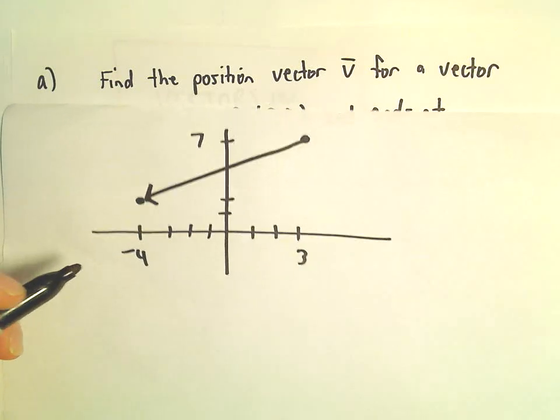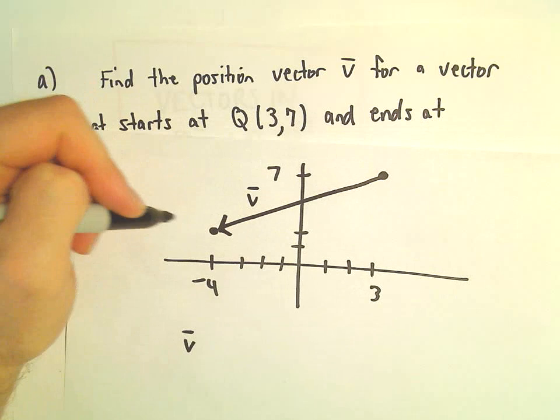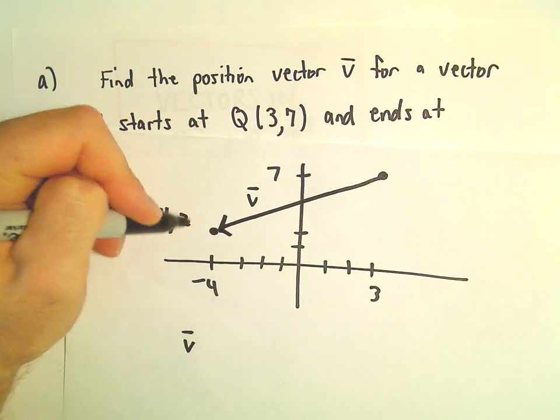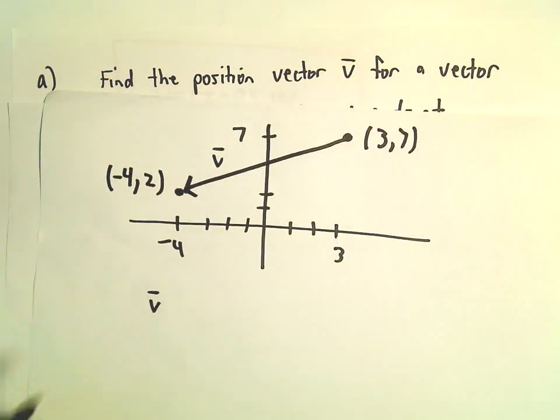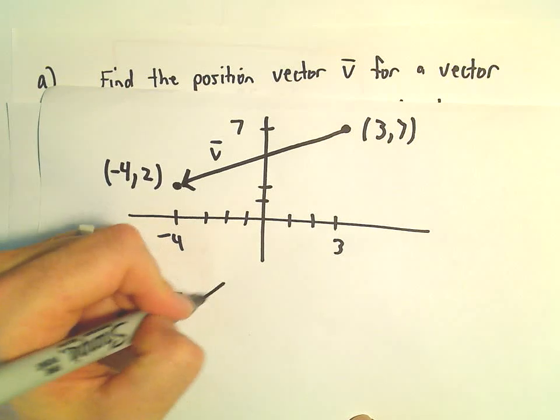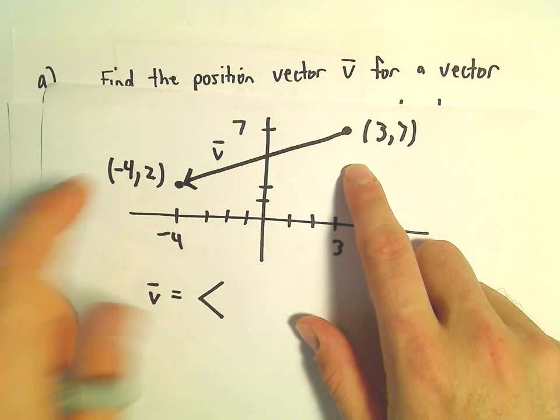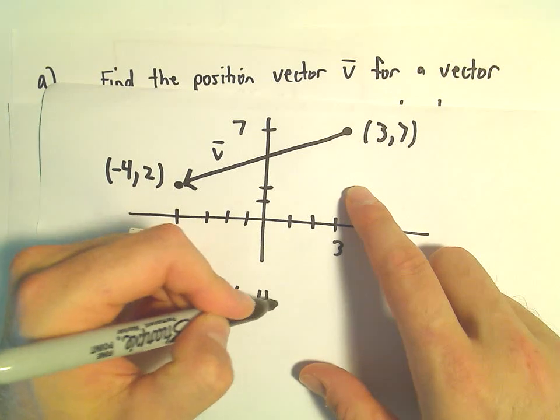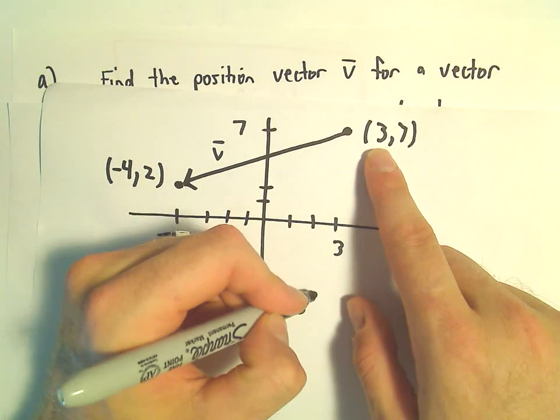To find this position vector, all we have to do is - I'm going to list the coordinates again. This is (-4,2), this was (3,7). What we do is we take the x-coordinates. We take the stopping point, which was -4, and we subtract away whatever the starting point was, which was the x-coordinate of 3.